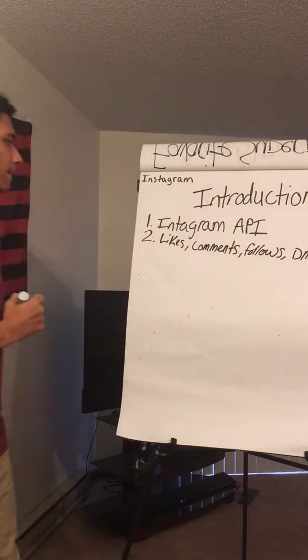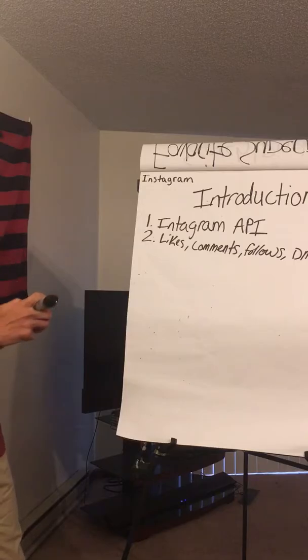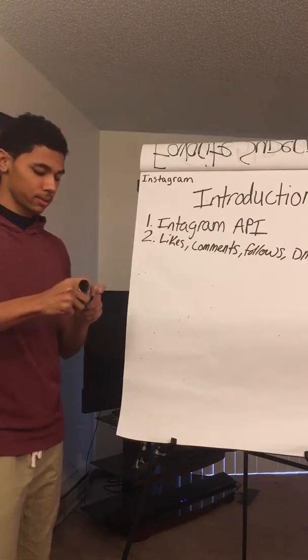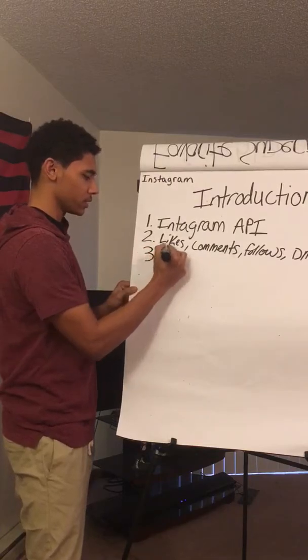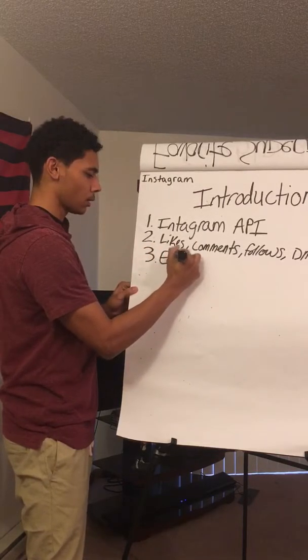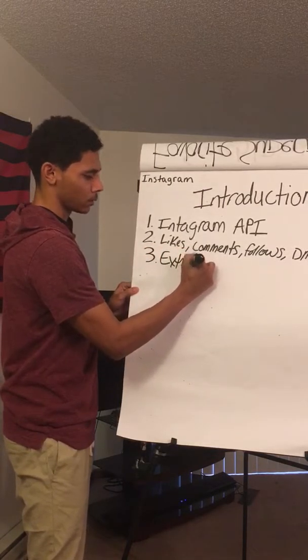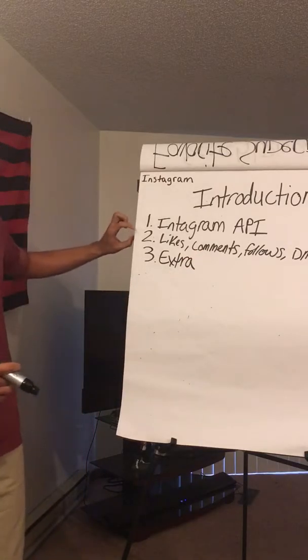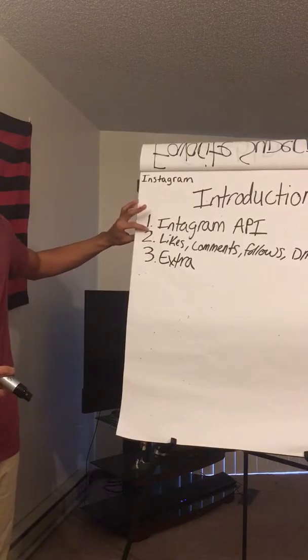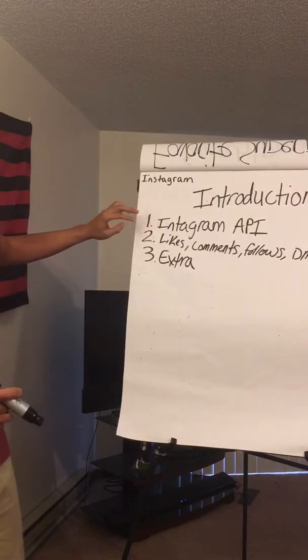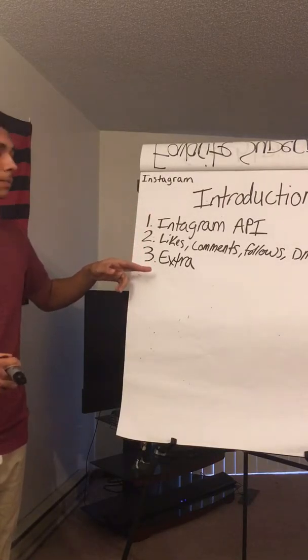So you have the Instagram API, likes, comments, follows, DMs. And then the last thing I want to talk about is all the extra stuff, all the miscellaneous stuff. Basically, when we're dealing with Instagram, these are the actions that we can take and the actions that we're looking for—the metrics. But what about all the ripple effects, all this extra stuff?